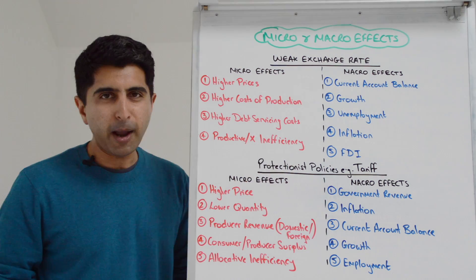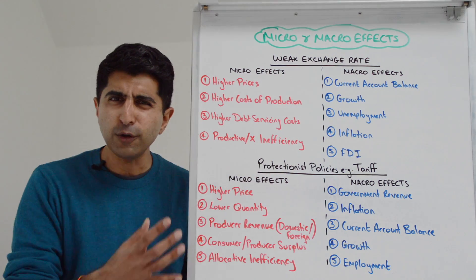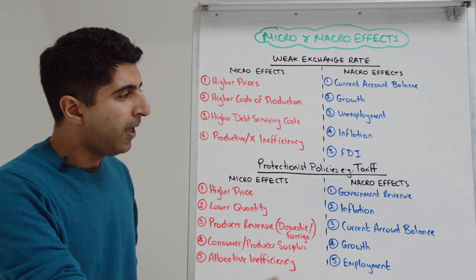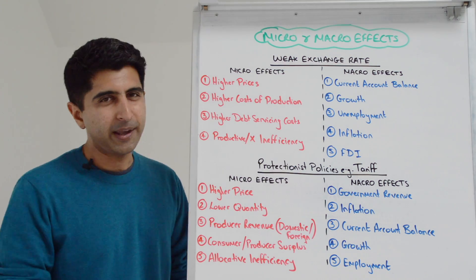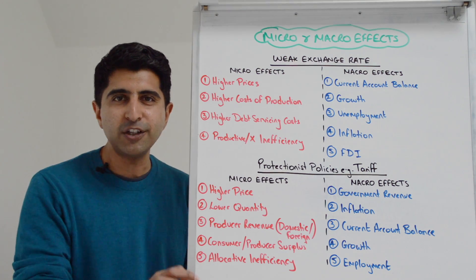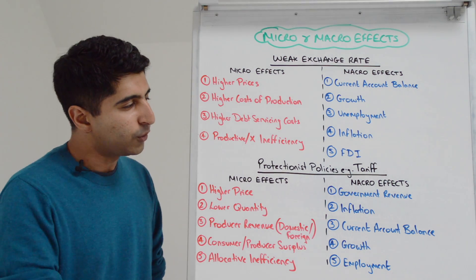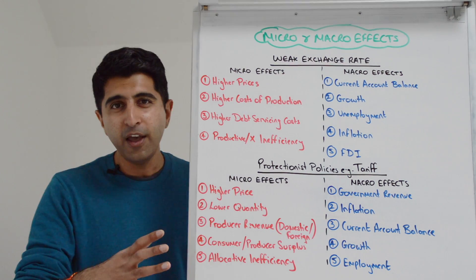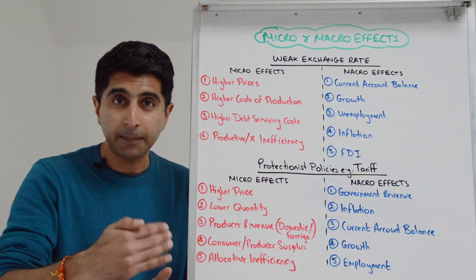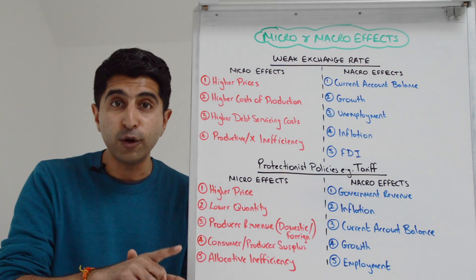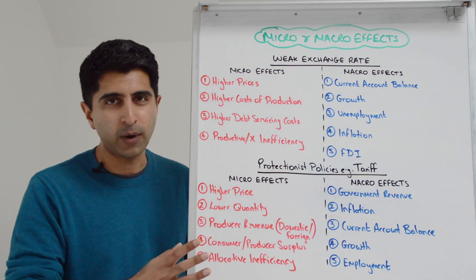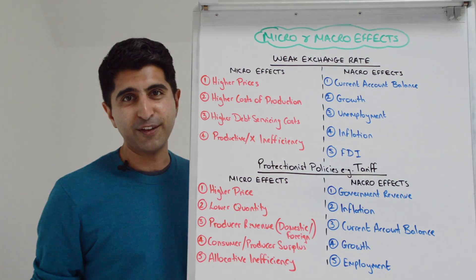So there you have it — the micro and macro effects of two big macro topic areas. Hopefully you saw how easy that is; it's all about content knowledge really. Your job is to do that for a wide variety of topic areas, but as I said at the start, I've done it all for you in my revision for Paper 3 playlist — lots of other videos covering other topic areas in the course. Having watched this, make sure you're staying up to date with future releases and watching all of those videos too. I can't stress enough how important that is. Thank you for watching.